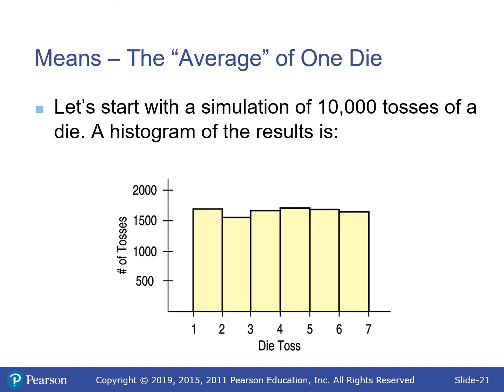Looking at the histogram from rolling 1 die: values 1 through 6, basically uniform as expected — about the same number of 1s, 2s, 3s, 4s, 5s, and 6s. If we roll 2 dice and find the mean — say we roll a 1 and 4, the mean is 2.5 — and do that 1,000 times, we get the 2-dice average distribution.